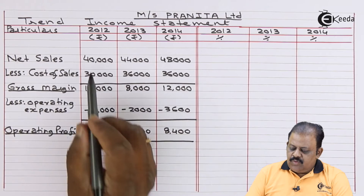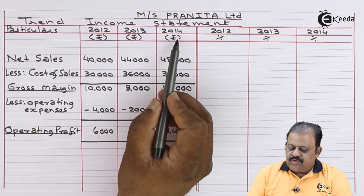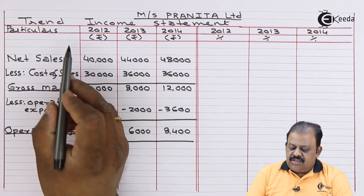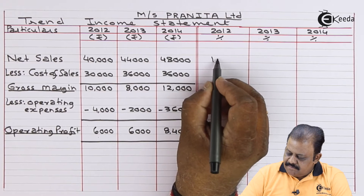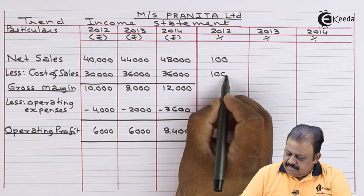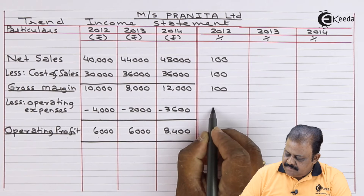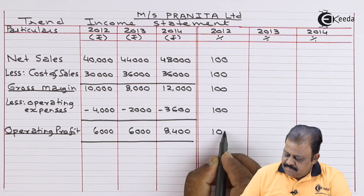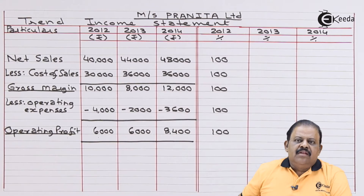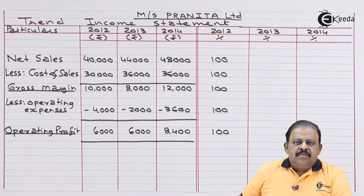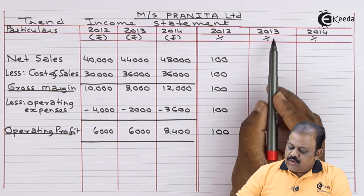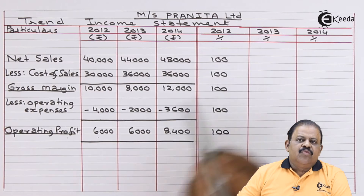For the trend statement, we need to select a base year. Here the base year is 2012. So all the values pertaining to 2012 will be taken as equal to 100. Based on this, we will be calculating trend percentage values for 2013 and 2014.